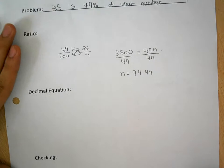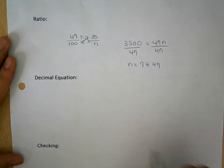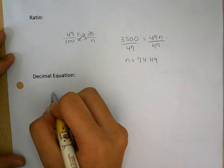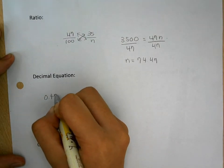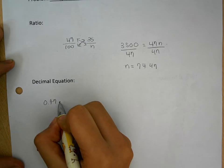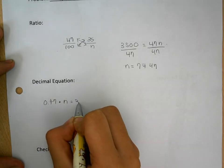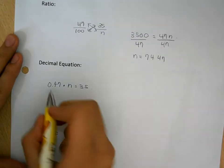To check this answer again with different methods, I would use a decimal equation. 0.47, which is equal to 47%, times n equals 35.